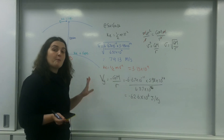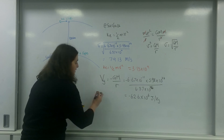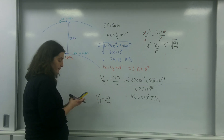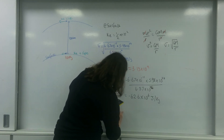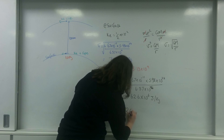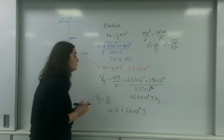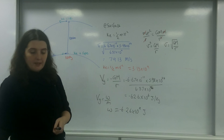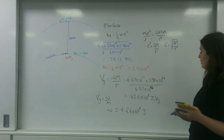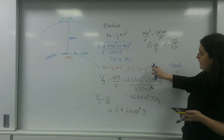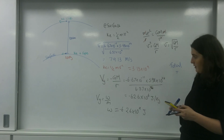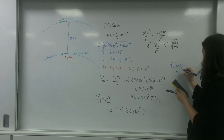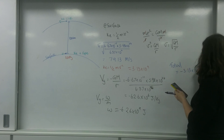That gives us the gravitational potential in joules per kilogram. To get the gravitational potential energy, we multiply by the mass M — so times by 100. This is how much energy I would need to add to remove this object from the field. In total at the surface, the total energy equals kinetic energy plus GPE, which gives minus 3.13 × 10⁹ joules.